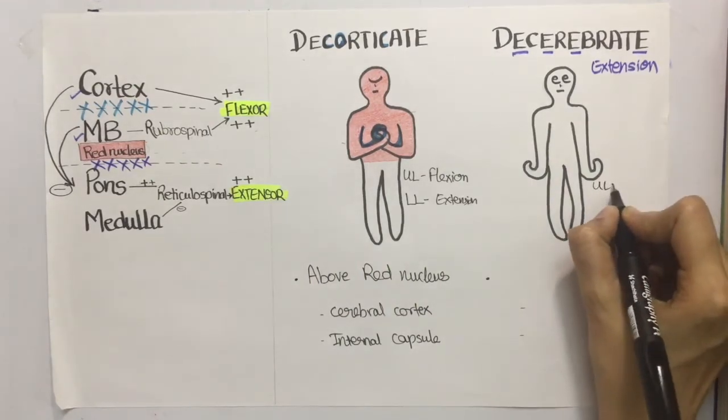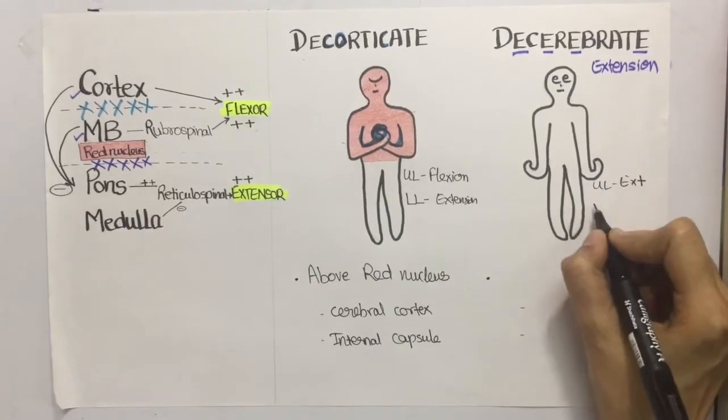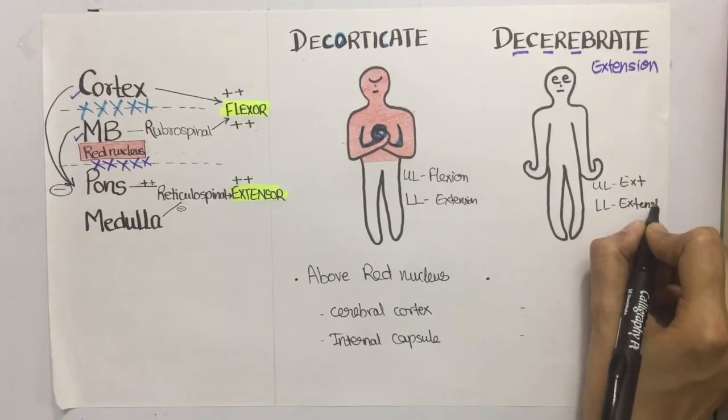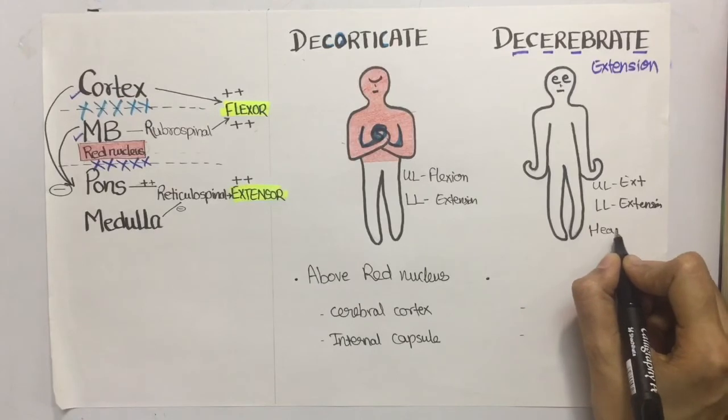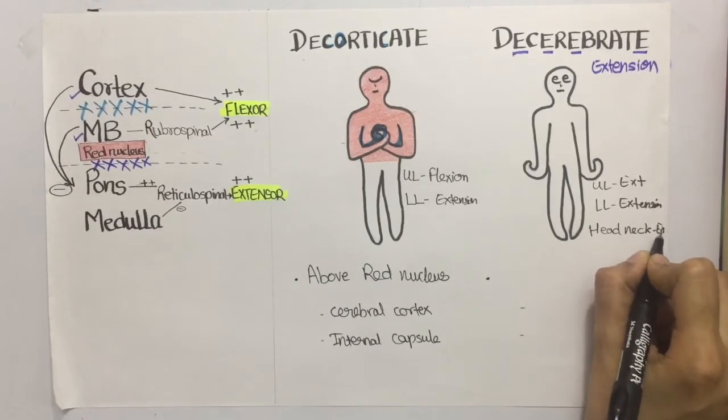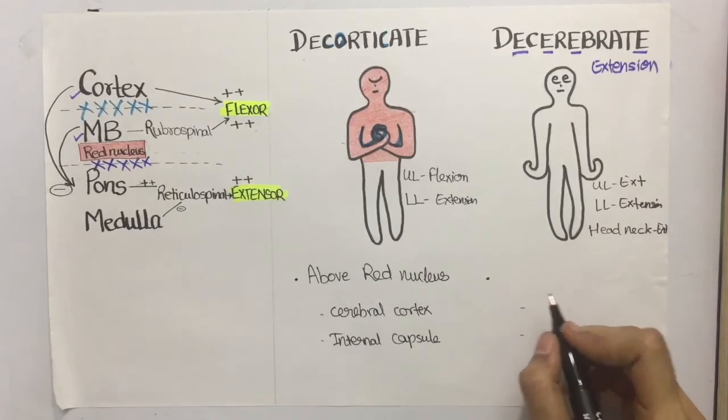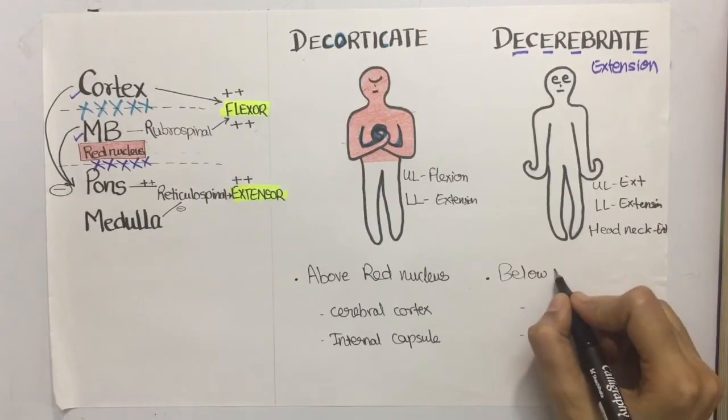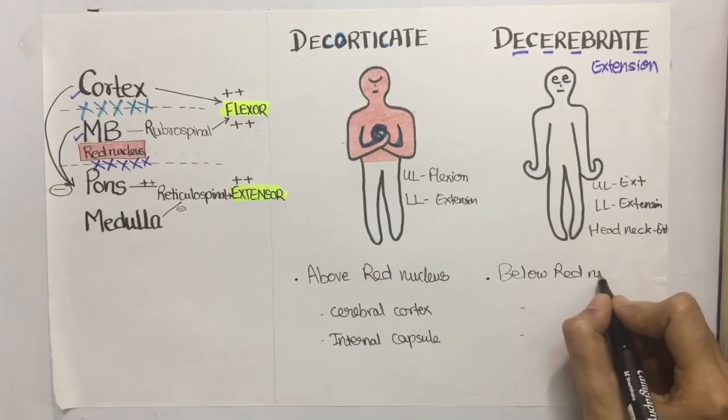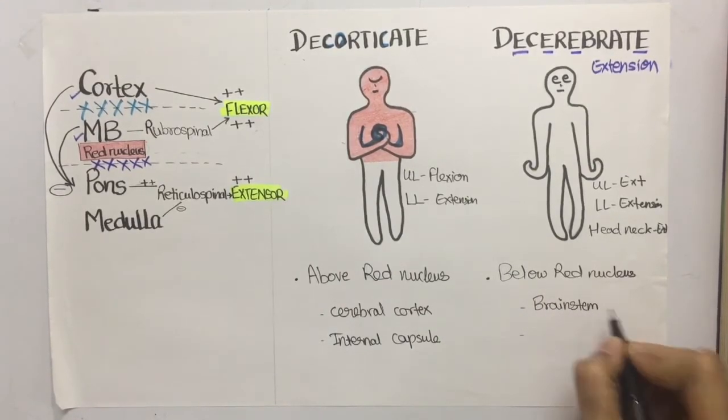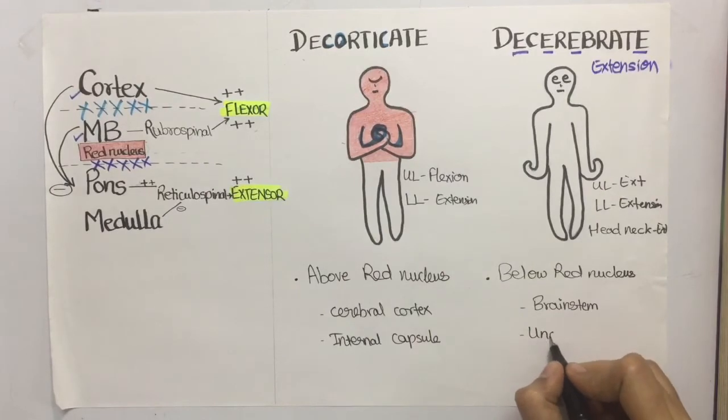So there is upper limb extension, lower limb extension and head and neck are also in extension. So the lesion in decerebrate rigidity is below the red nucleus at the brain stem and clinically it can be seen in cases of uncal herniation.